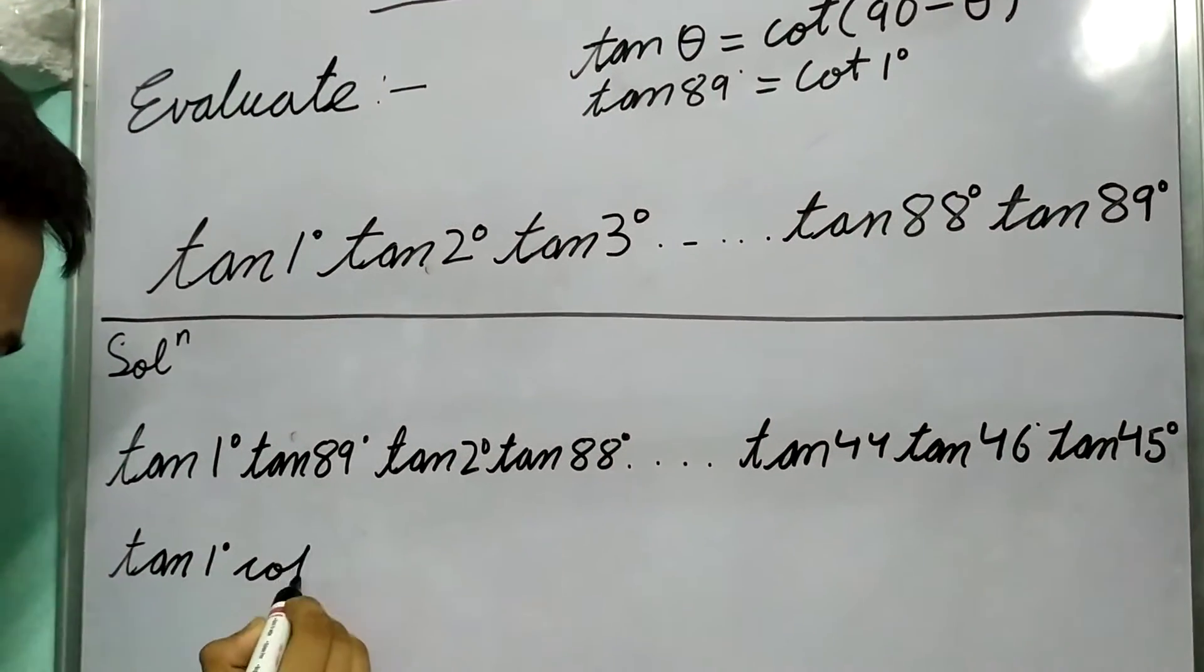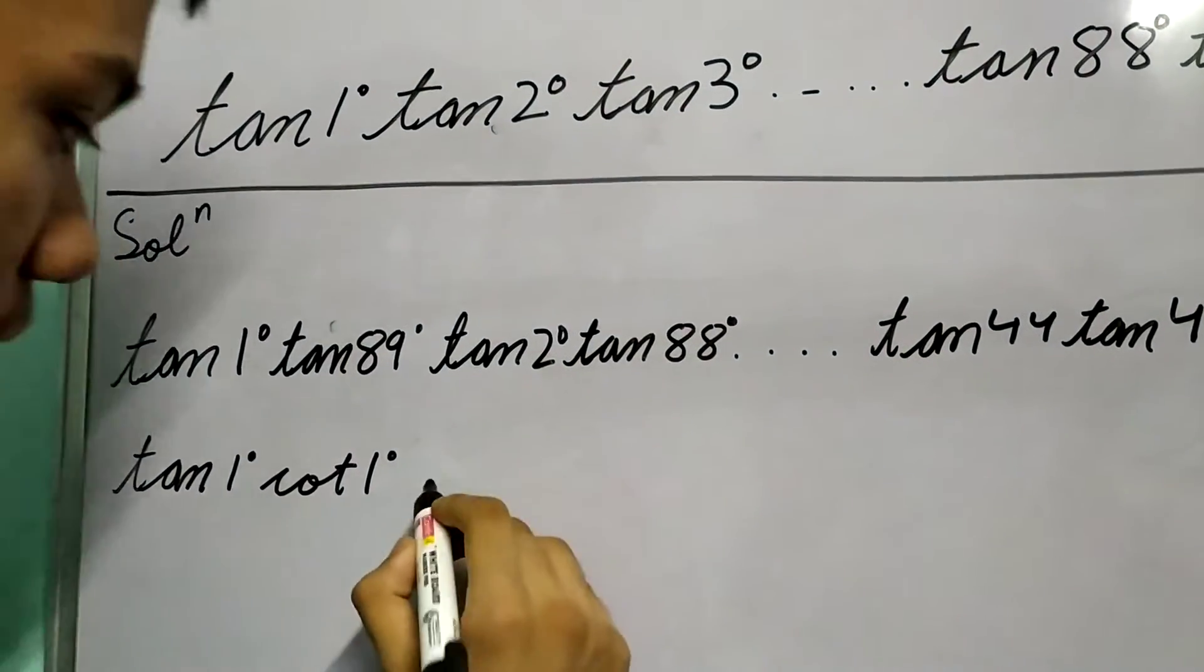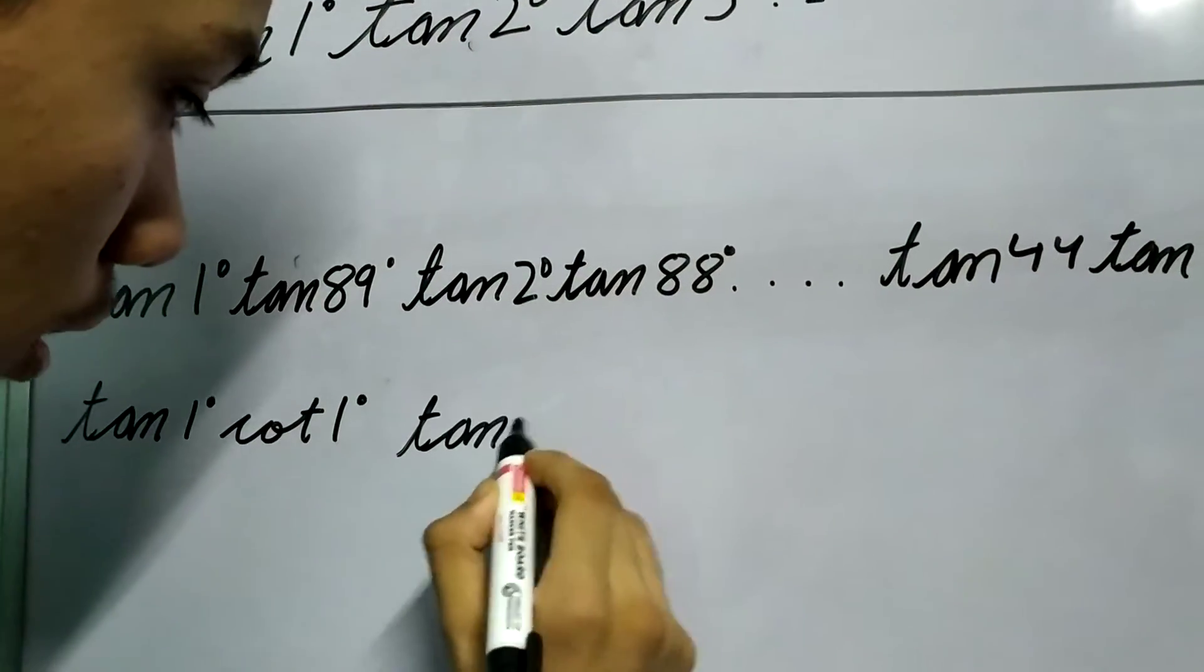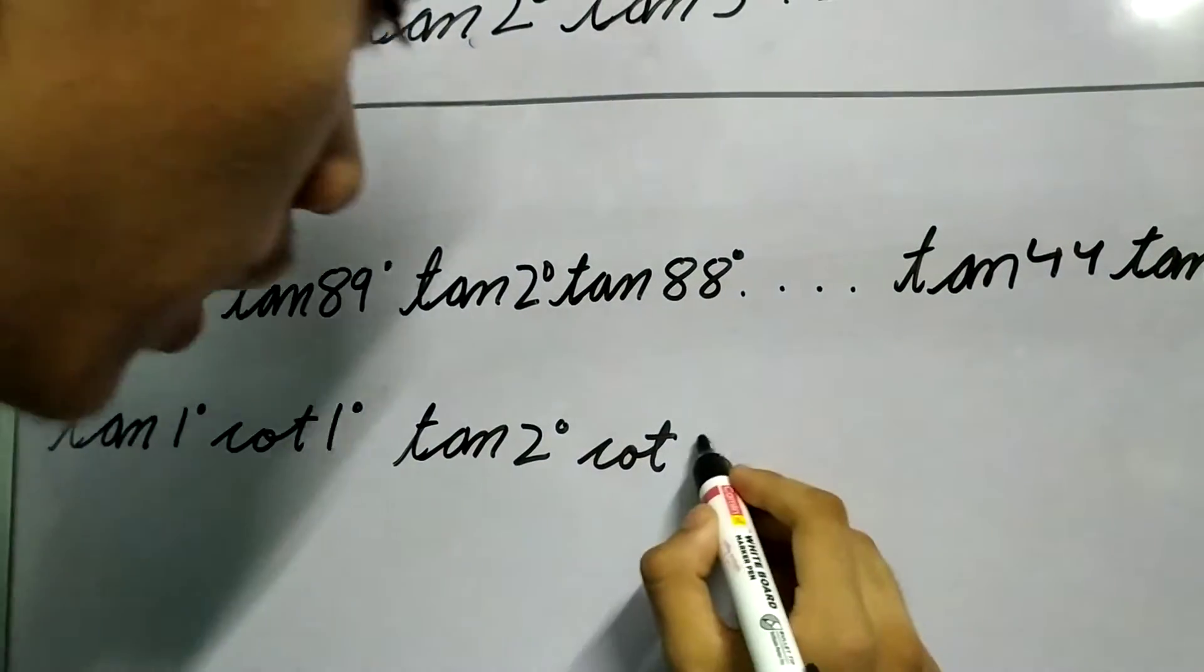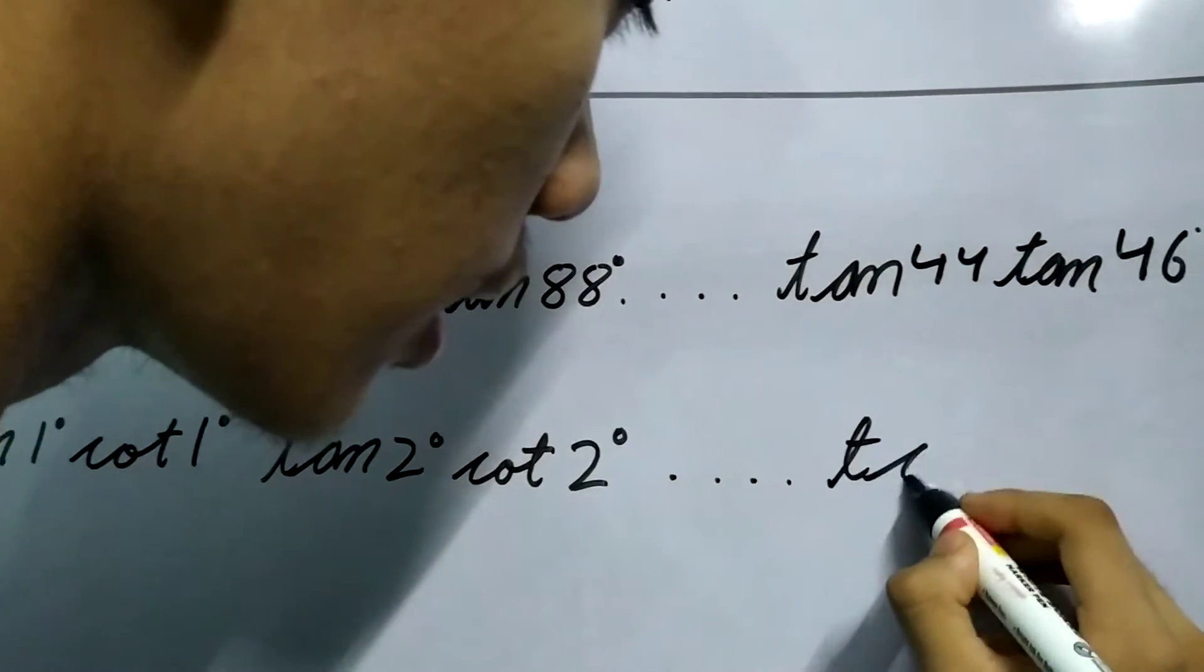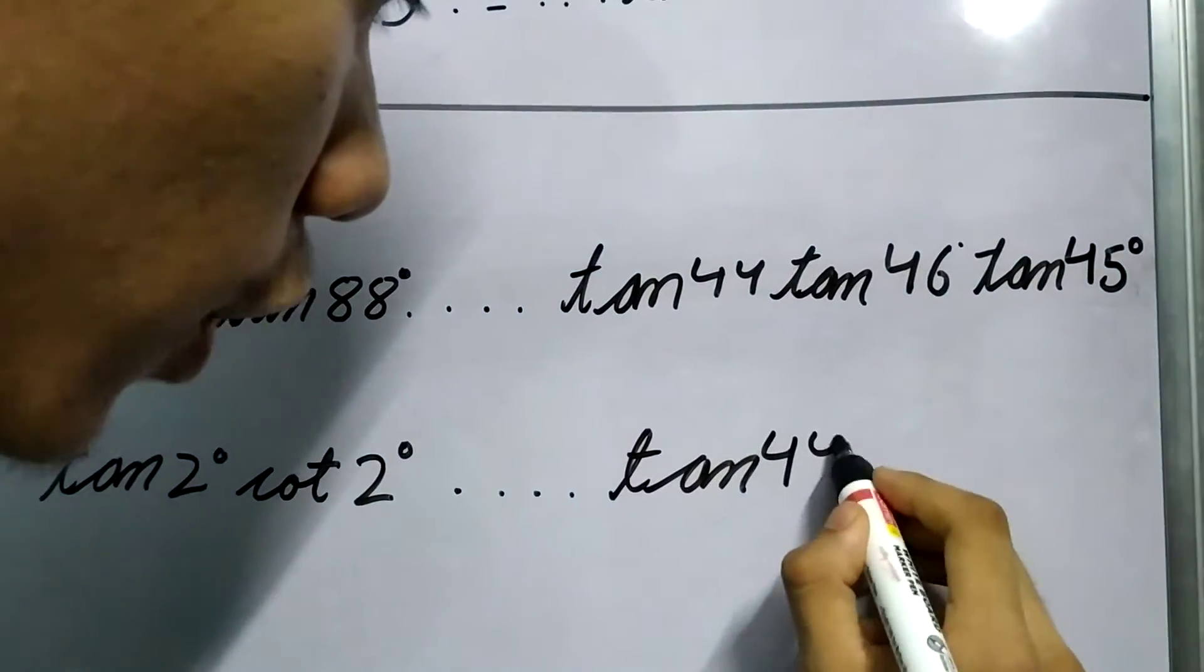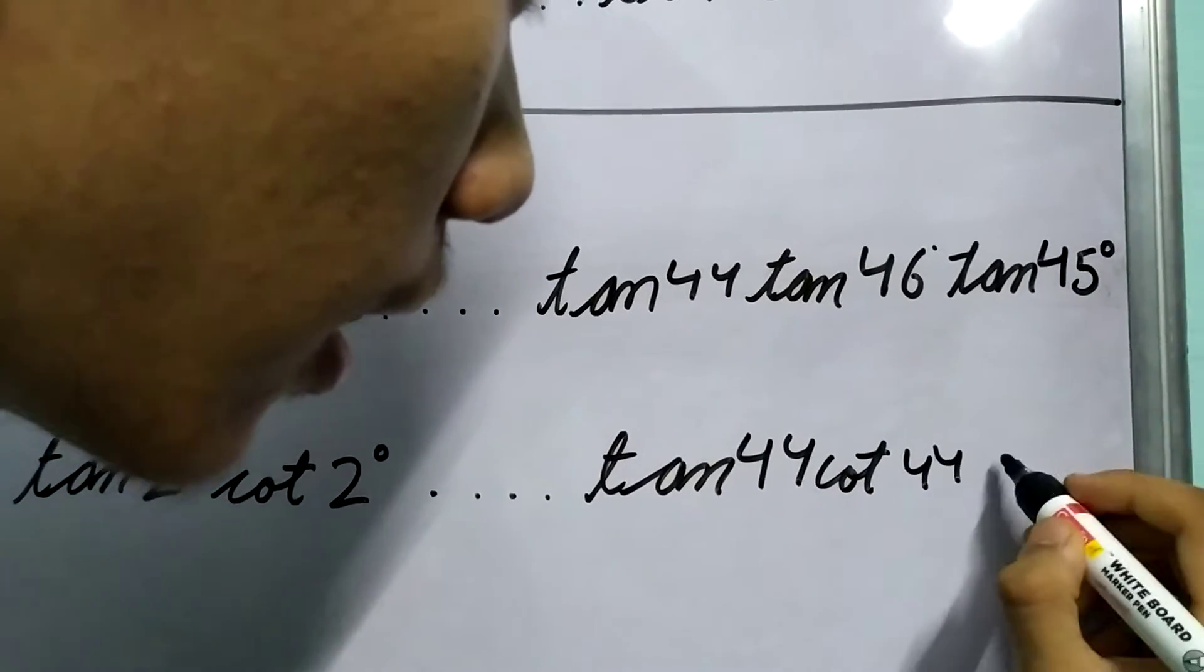We can write it as tan 1° · cot 1°. Similarly we can write tan 2° · cot 2°, and so on till tan 44° · cot 44°.